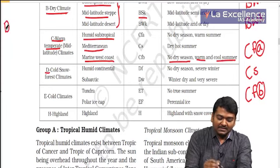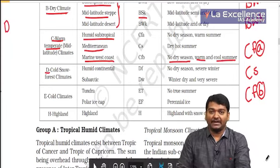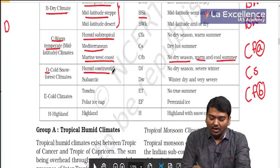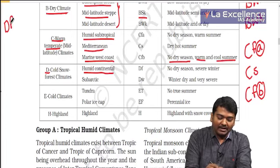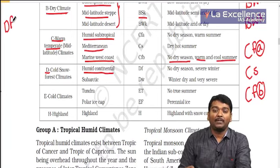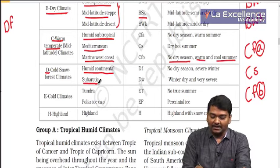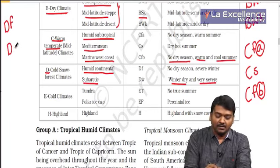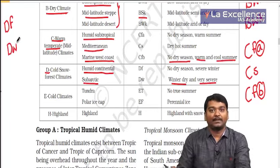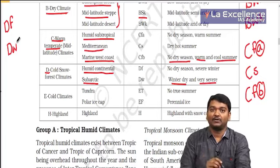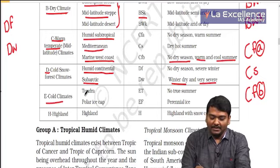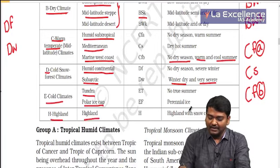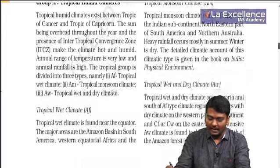D means cold climatic conditions — minus 3 and below, cold temperature. Humid continental gets rainfall throughout the year — associated with taiga forest. Subarctic has very severe dry winters, coded DW. E covers cold climates: tundra and polar ice cap. H is highland with snow and varying climatic conditions with altitude.